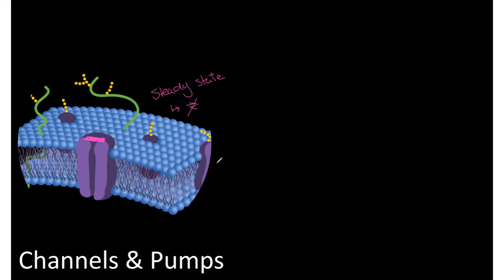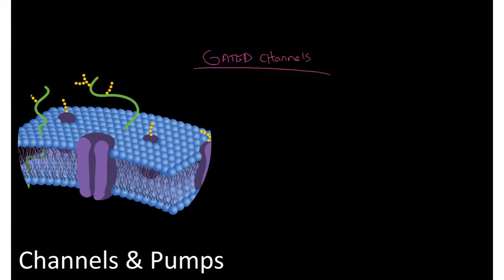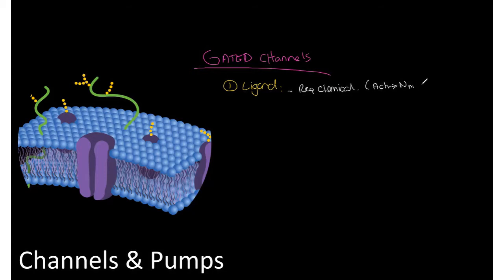Gated channels have three types of mechanisms. First: ligand-gated, which requires binding a specific chemical to open. When that chemical binds, the channel opens. A common example is acetylcholine binding to nicotinic muscular receptors in the peripheral nervous system.